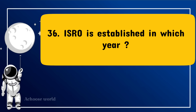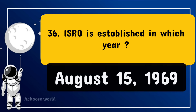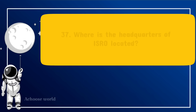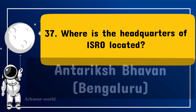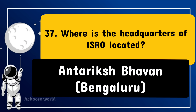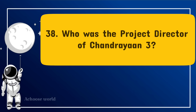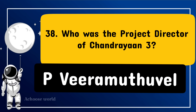ISRO was established in which year? August 15, 1969. Where is the headquarters of ISRO located? Antariksh Bhavan, Bengaluru. Who was the project director of Chandrayaan 3? P. Veeramuthuvel.